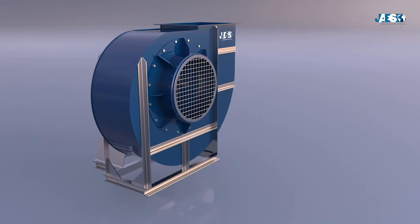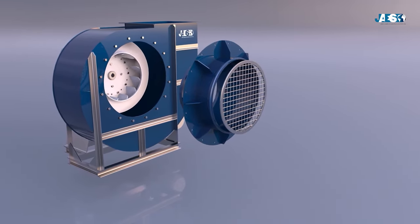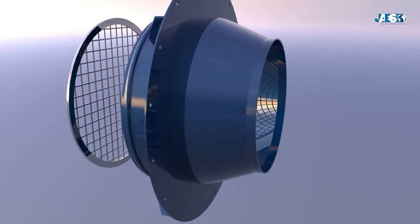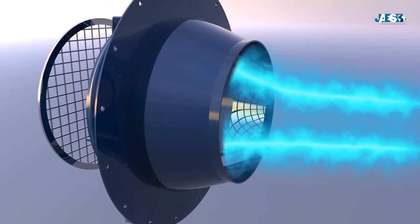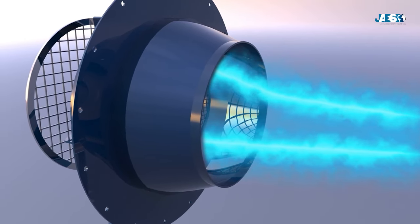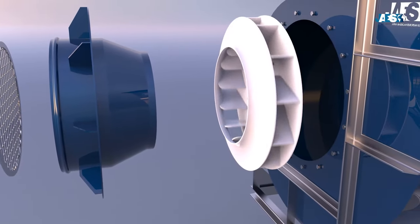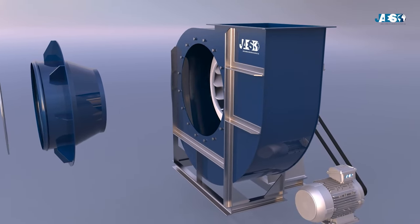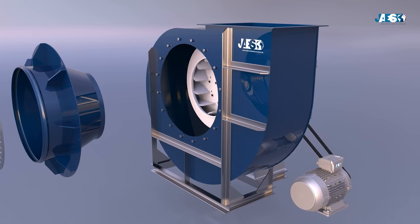If we observe its components, we'll find the inlet flange, which always integrates a protective grate, the inlet cone designed as a venturi tube to increase the speed of entry flow. Then we find the impeller, located inside of a snail-shaped structure in sheet metal. This design increases the centrifugal factor.